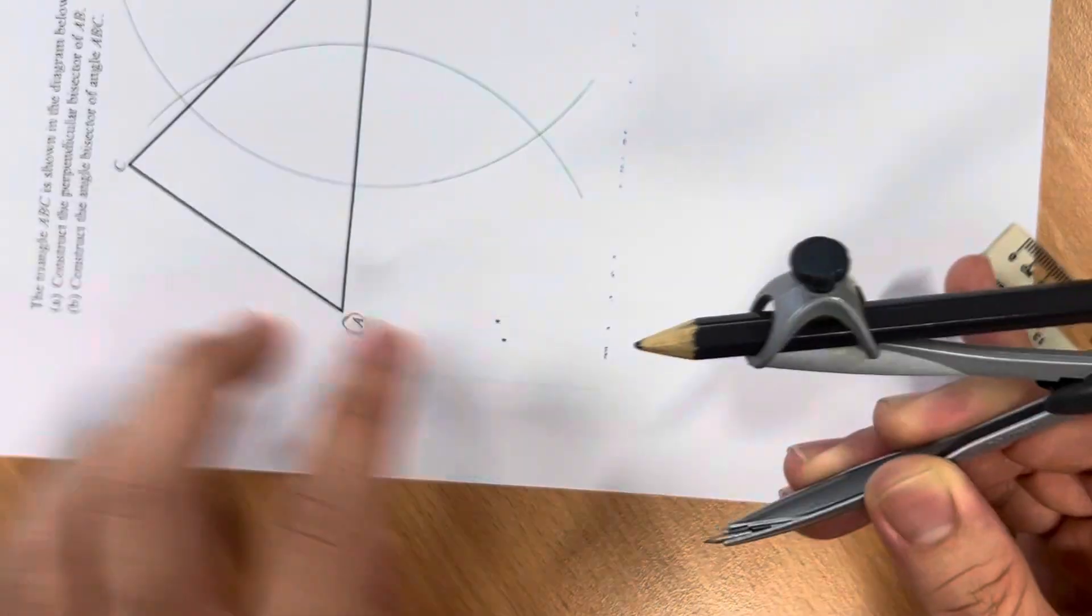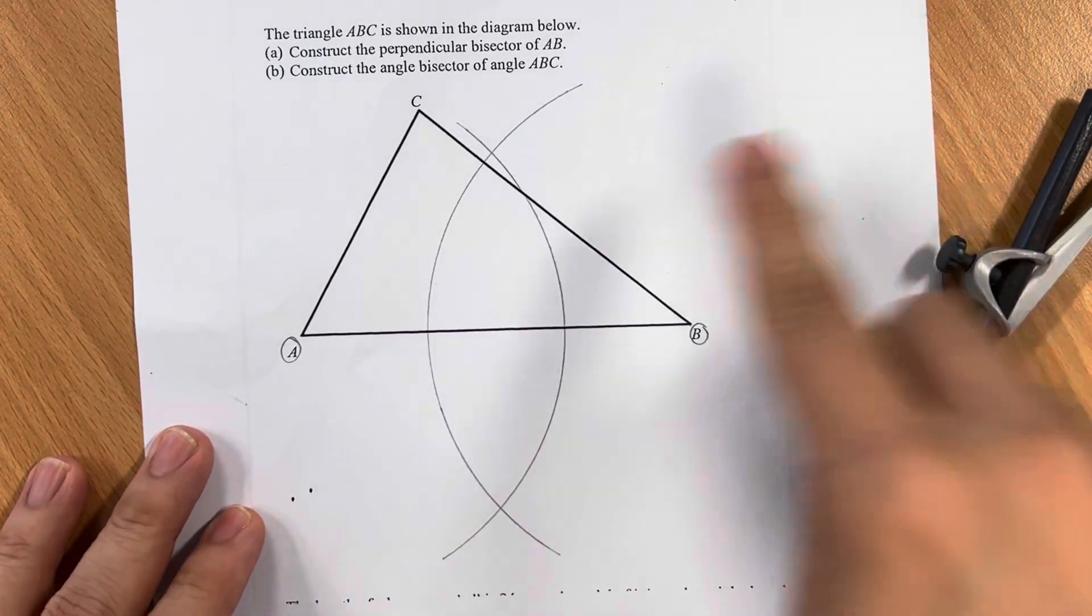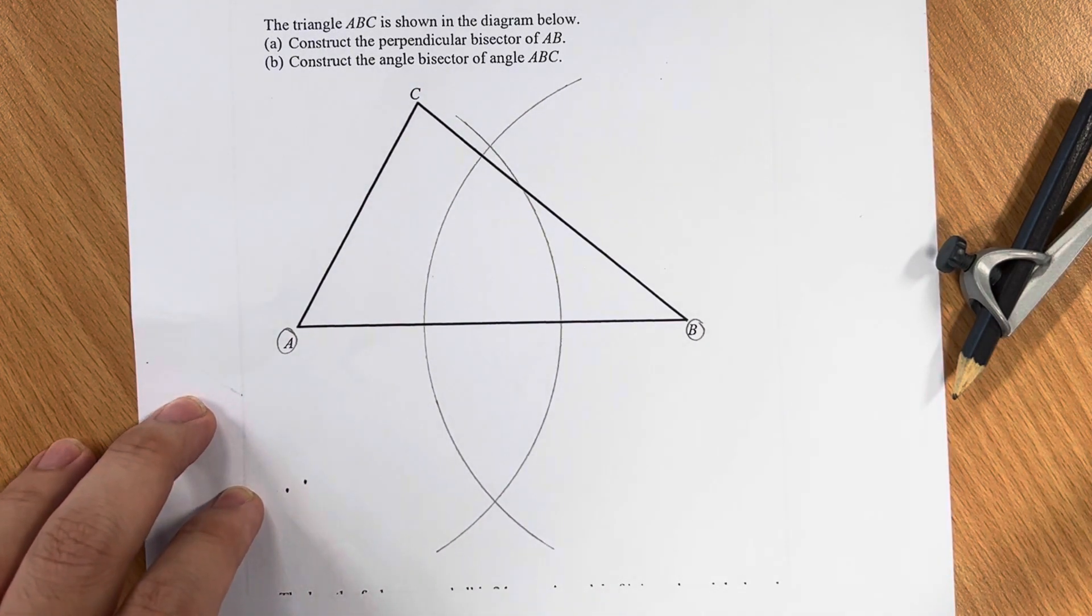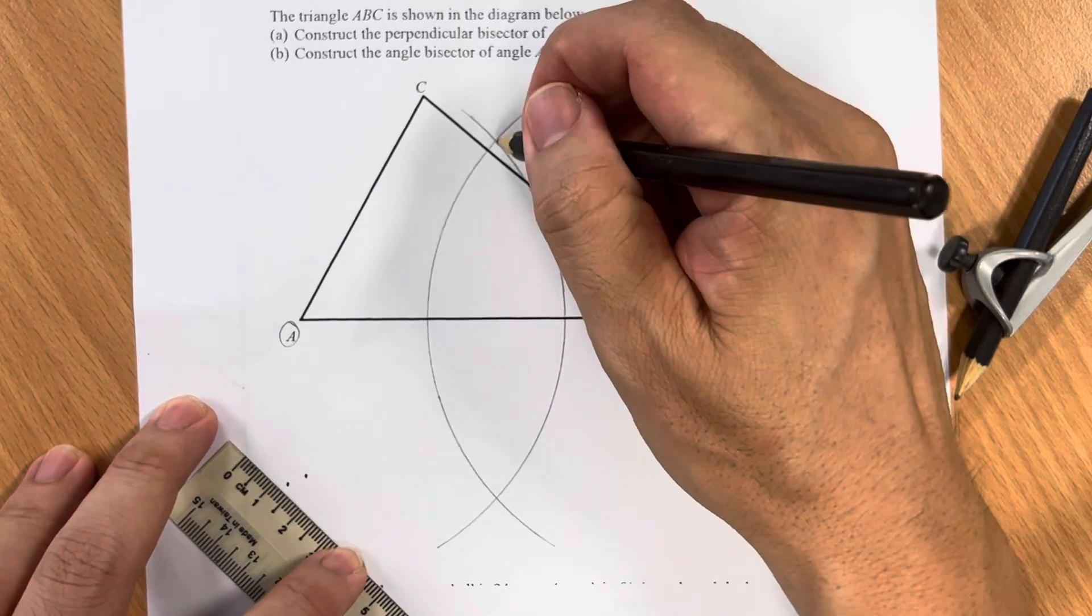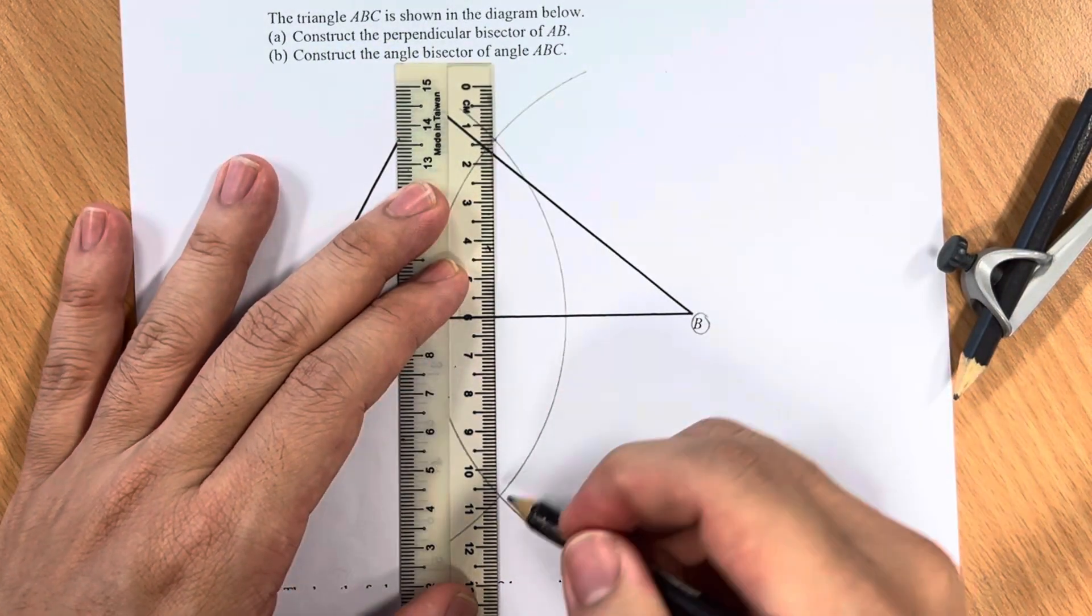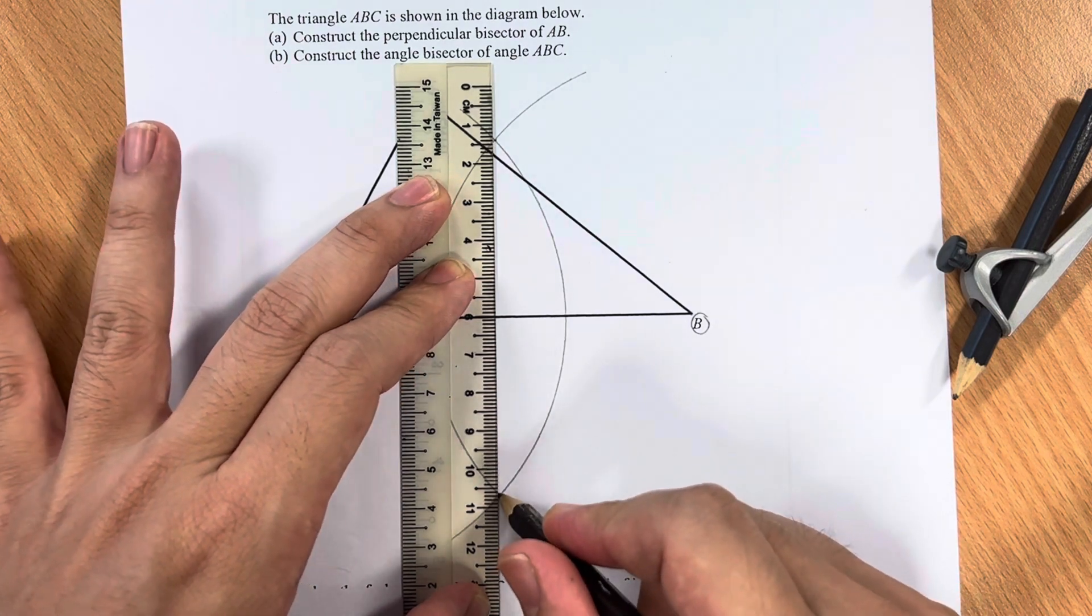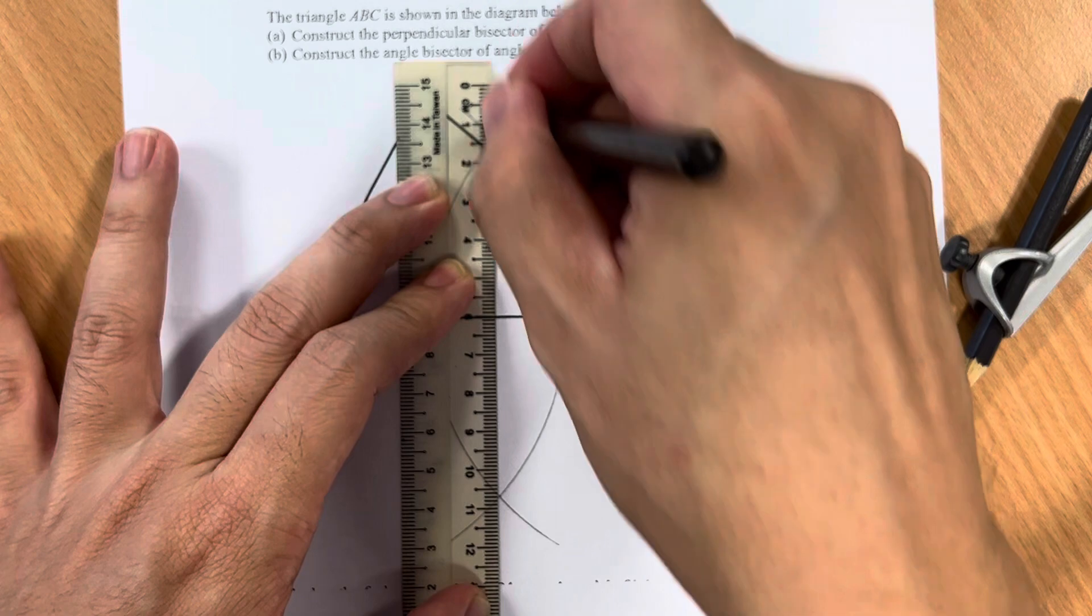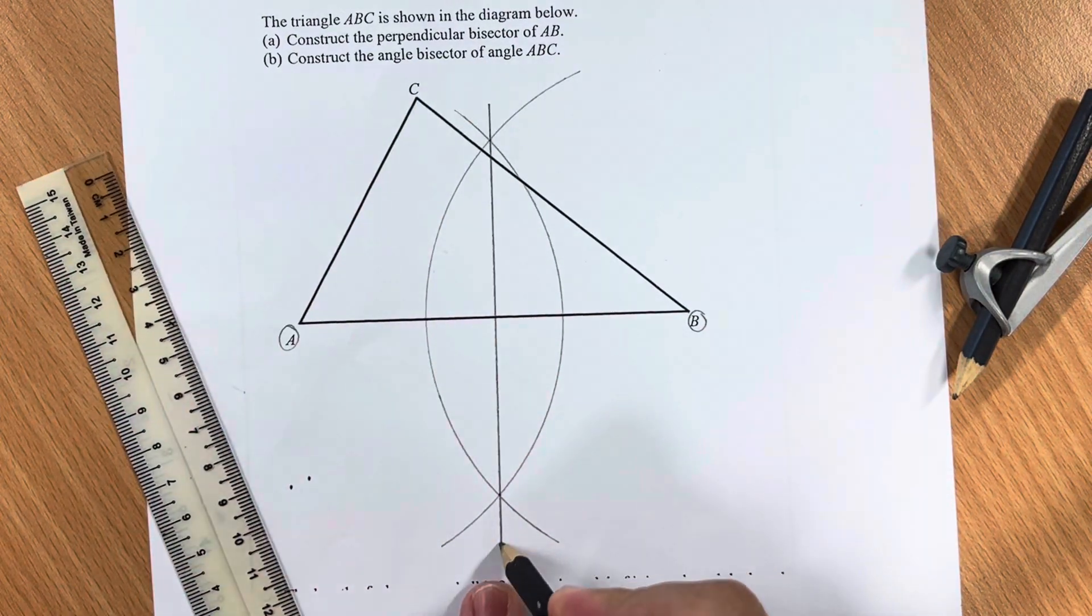After you have completed drawing these two arcs, you will then see that there are two intersection points at the top and at the bottom of the line that we are drawing the perpendicular bisector of.